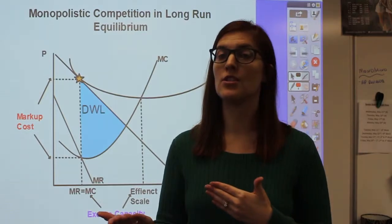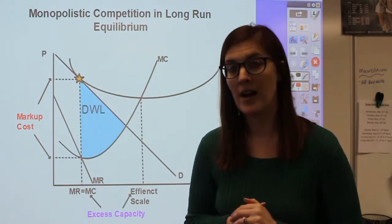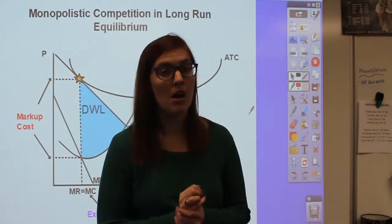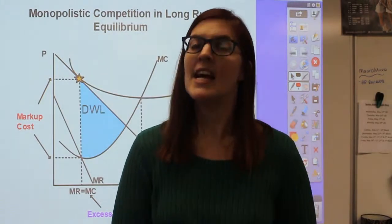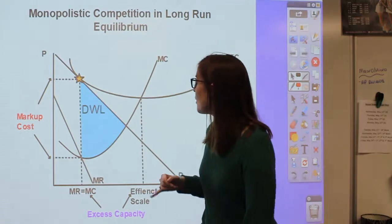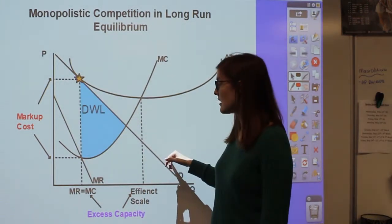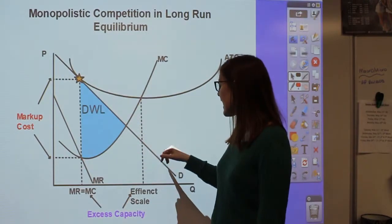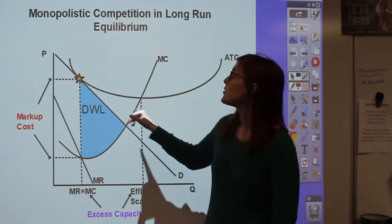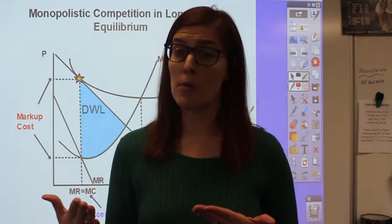In perfect competition, price was the same as marginal revenue — that's not the case anymore. Now we have marginal revenue always falling below the demand line. This is because with a downward sloping demand line, if a producer is going to sell a larger quantity at a lower price as they move down along the line, they have to sell all the previous quantities at the lower price as well, which is why marginal revenue will always fall below the demand line.